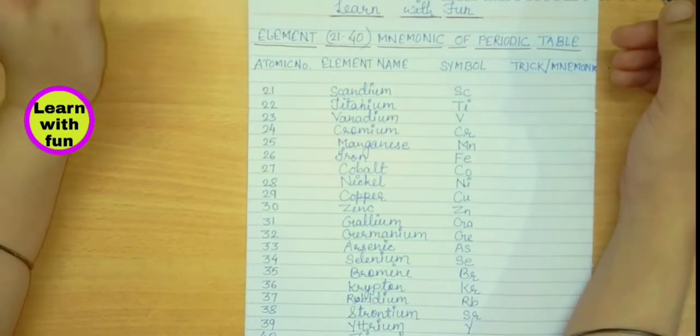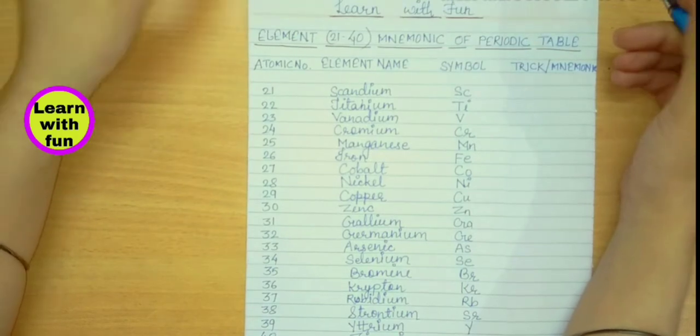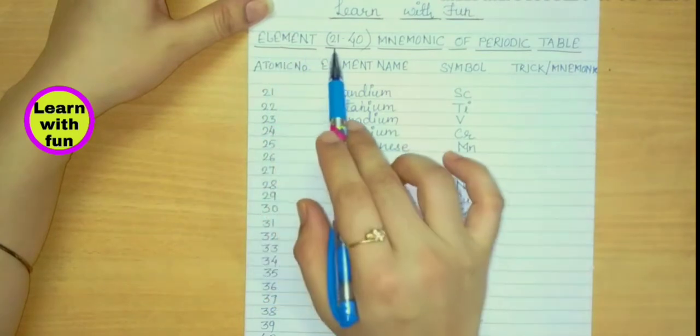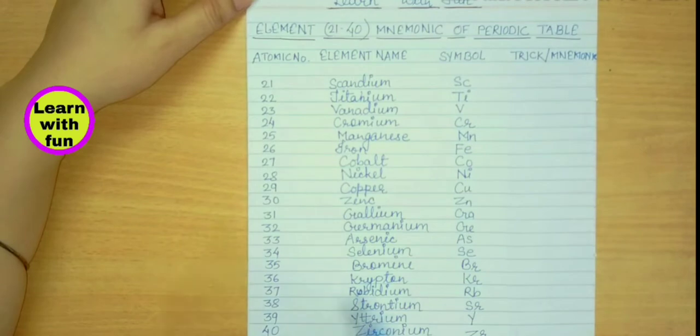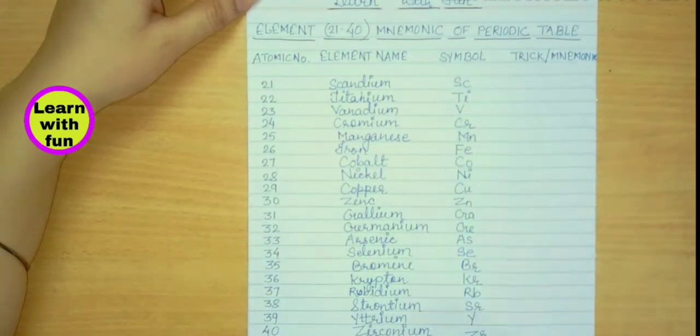And I'm surely saying after this video you will be able to learn atomic numbers with their symbols. So let's start elements 21 to 40 mnemonics of periodic table. Here I have written atomic numbers 21 to 40, here I have written element names, here are the symbols, and here we will write the trick.